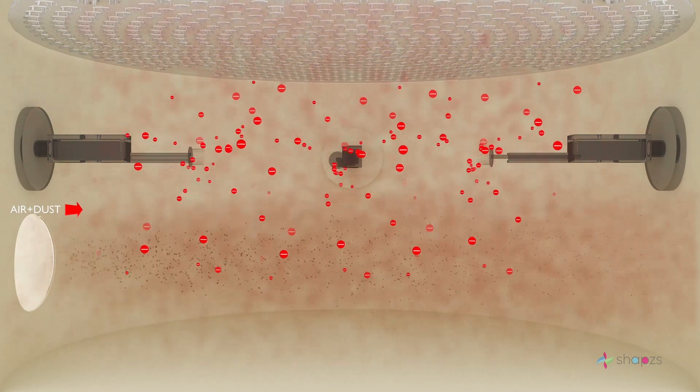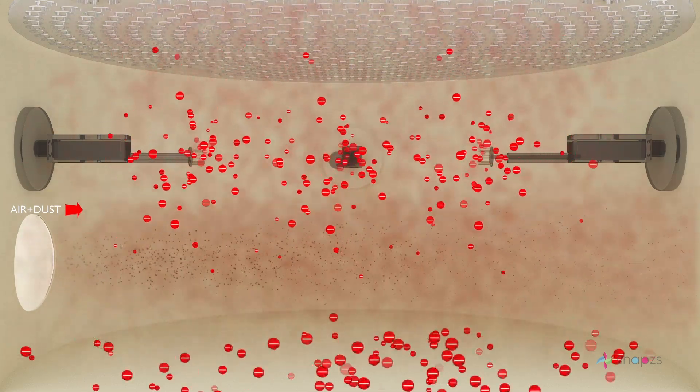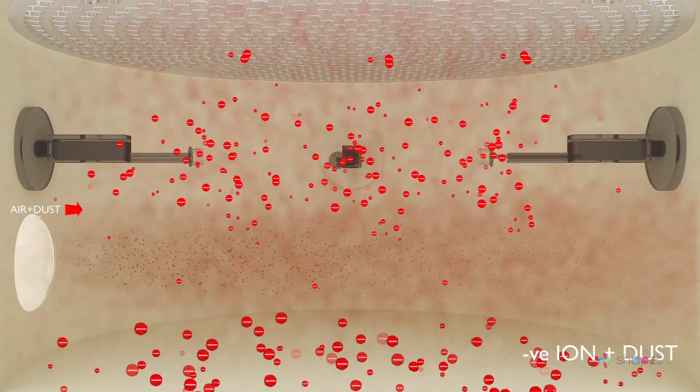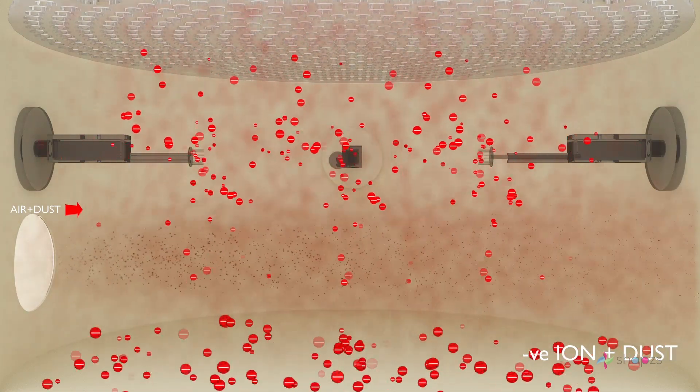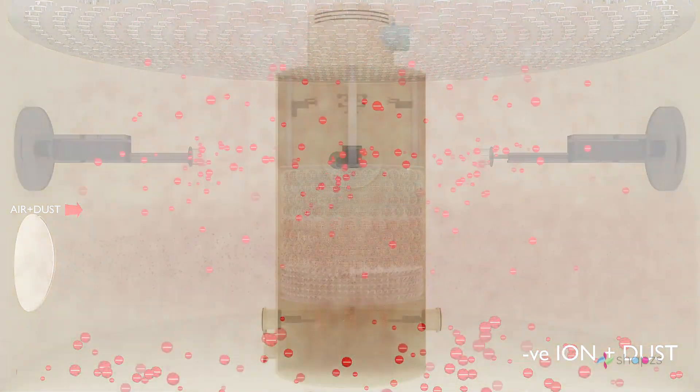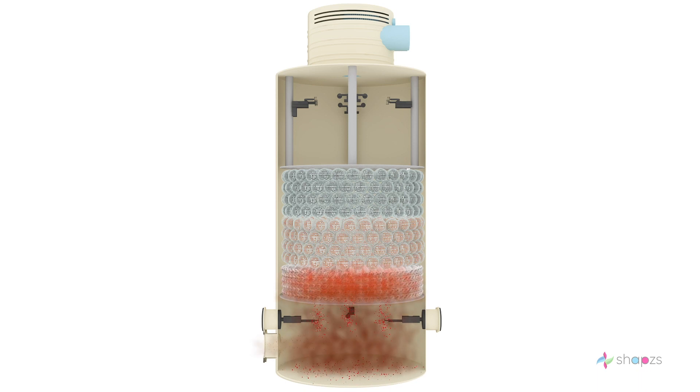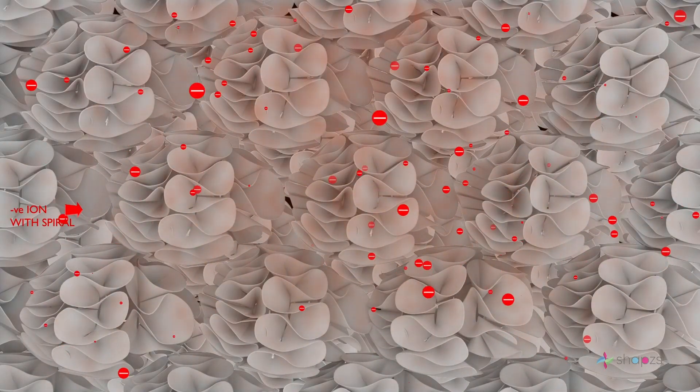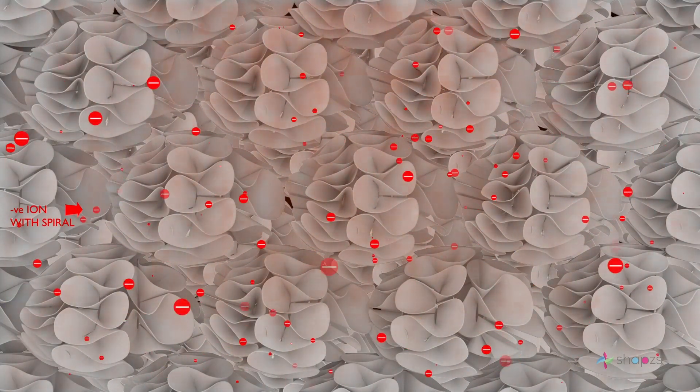These negative ions should combine with dust particles and should settle down. 50% of the dust particles and negative ions should settle down. The remaining 50% of ions and dust particles should move up into the spiral media layer. Here the remaining negative ions and dust particles should settle down on the spiral surfaces.